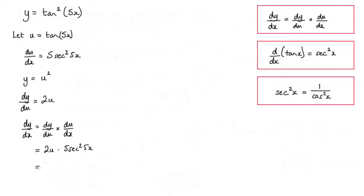Now we can start to simplify a little bit. Well, I've got this 2 and this 5, which makes 10. u, well that is tan of 5x. So tan 5x. And then we've got sec squared 5x.